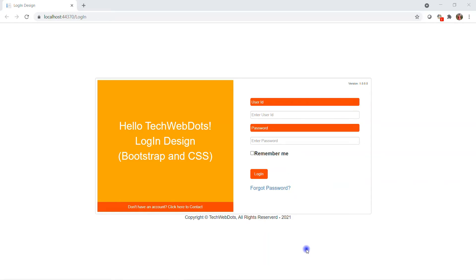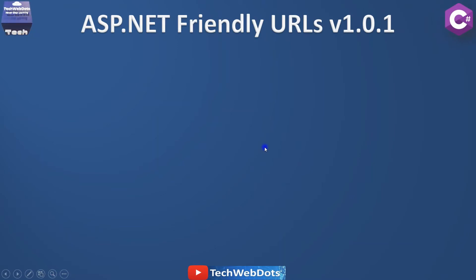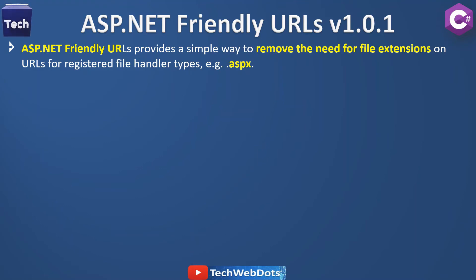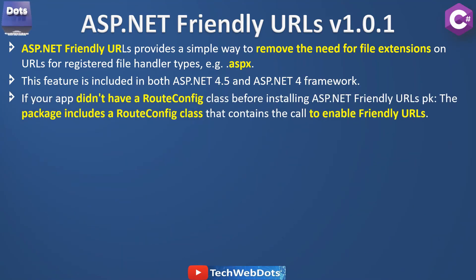We are using ASP.NET Friendly URLs version 1.0.1, though the version may differ on your machine. ASP.NET Friendly URLs provides a simple way to remove file extensions on URLs for registered file handler types, such as ASPX. This feature is included in both ASP.NET 4.5 and ASP.NET 4 frameworks. I'll also show you a use case for why we should use friendly URLs.